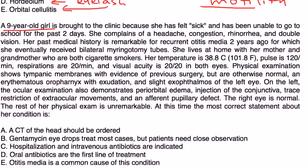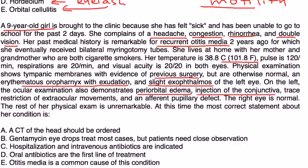Second vignette: A nine-year-old girl is brought to clinic because she has felt sick for two days with headache, congestion, rhinorrhea, and double vision. Past medical history is notable for recurrent otitis media. She lives with her mother and grandmother who are both smokers. Temperature is 101, pulse 120. Exam shows erythematous oropharynx with exudation, slight exophthalmos of the left eye, periorbital edema, injection of the conjunctiva, trace restriction of extraocular movements, and an afferent pupillary defect. Right eye is normal.